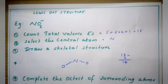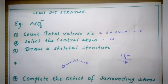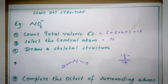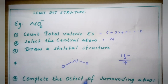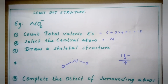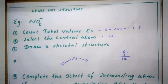The third step is to draw a skeletal structure. We are just roughly drawing a structure. We know that NO2 minus has a bent shape, but here we are drawing just a rough shape. There should be a single bond between nitrogen and each oxygen. Nitrogen is the central atom attached to two oxygens, at least with a single bond. This is just the skeletal structure.